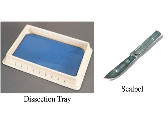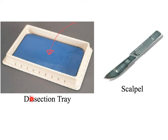These two items will be used in dissections: a dissection tray and a scalpel. It is important that you call it a scalpel — not a knife — its function is for cutting things. The dissection tray's function is that you put whatever you're dissecting into the tray, and it keeps your lab bench clean. All the liquids and material from the dissection stay in the tray.